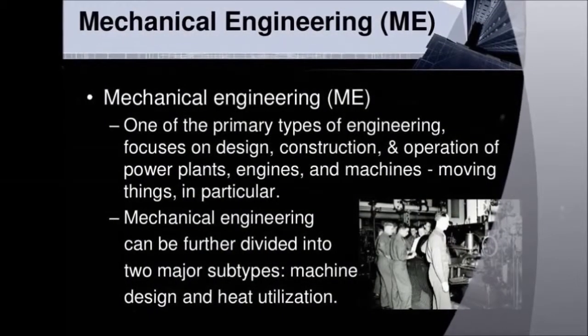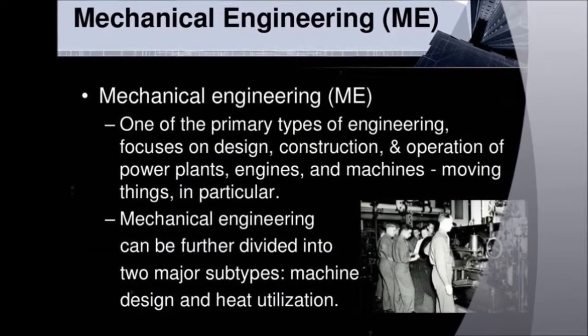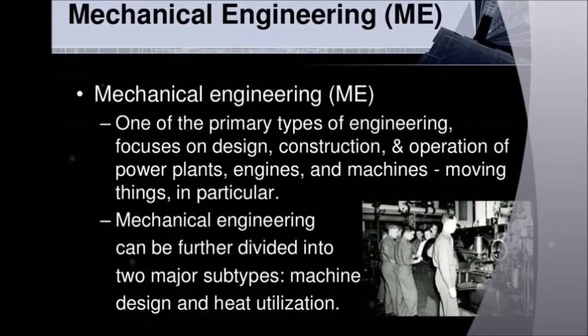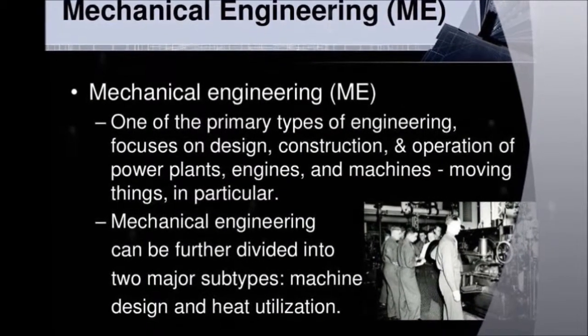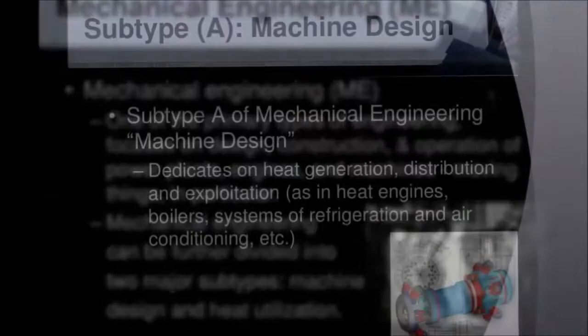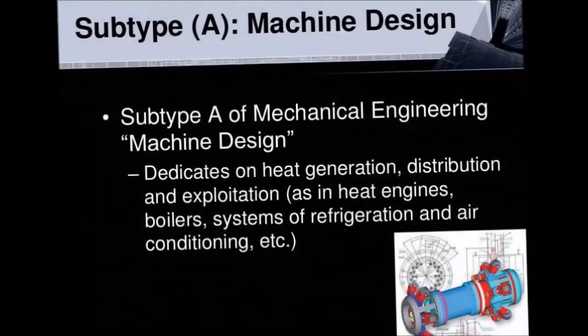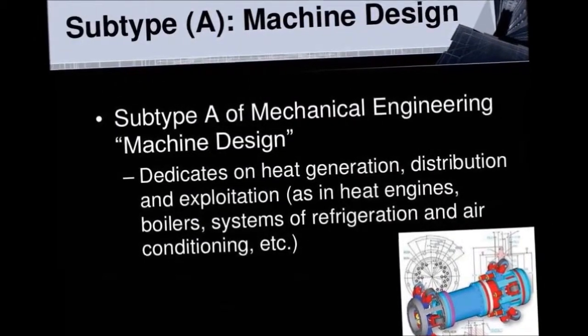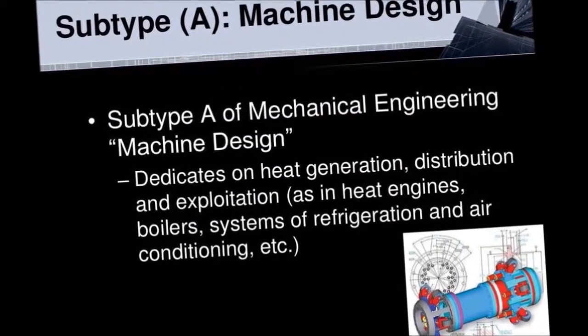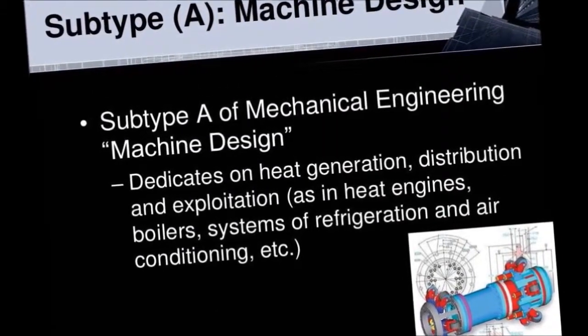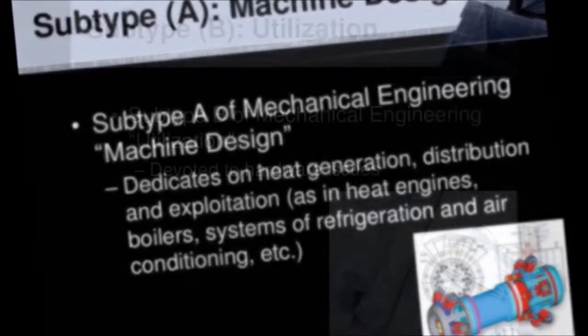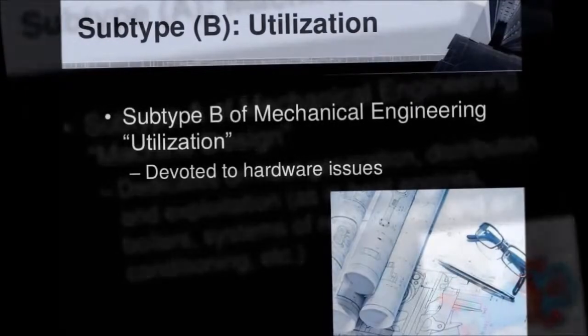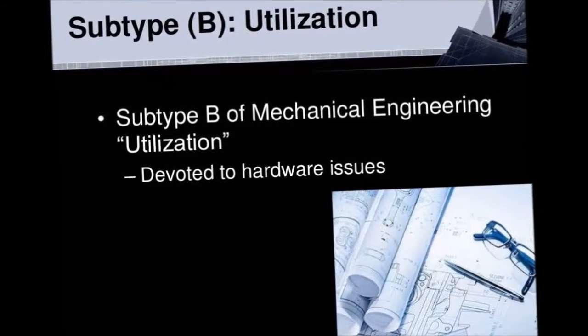Mechanical engineering is a primary type of engineering. It is divided into two parts: machine design, and the second one is utilizations, which is devoted to hardware issues.